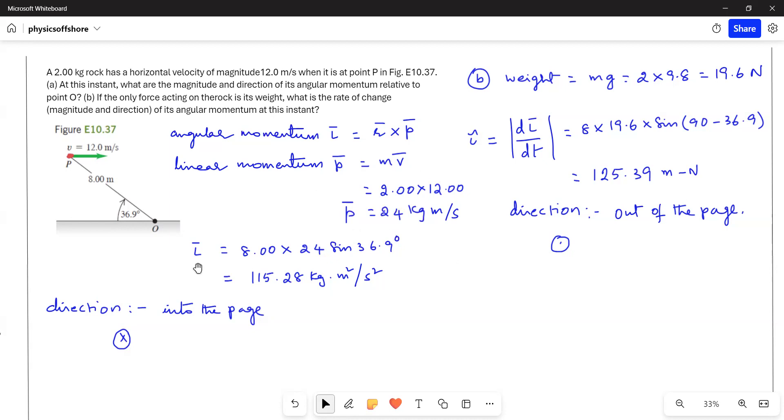Now we plug in the values for angular momentum. At point B, momentum is going in this direction at 36.9 degrees. L equals 8 times 24 times sin 36.9 degrees, which gives 115.28 kg·m²/s. The direction is into the page.